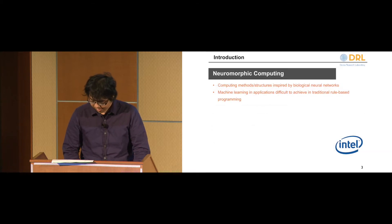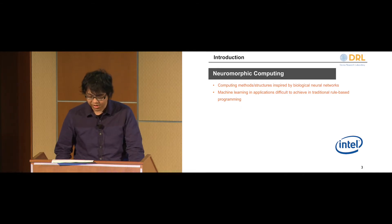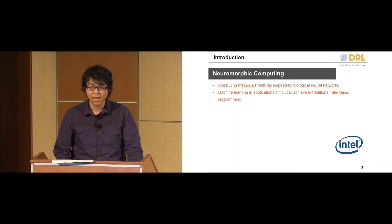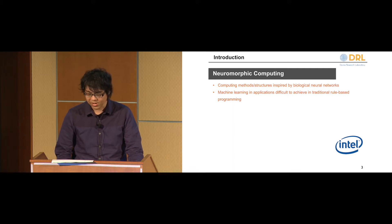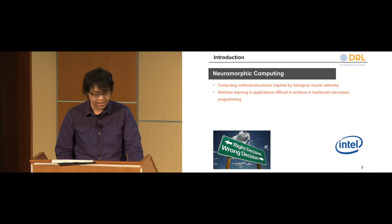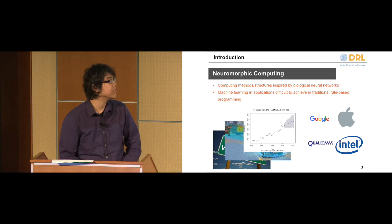Neuromorphic computing generally refers to computing structures, methods, and algorithms that were inspired by the biological nervous system. Currently it is applied to a very diverse range of applications — basically any application that we find it is a little hard to explicitly program. Examples of this include decision-making, forecasting, image recognition, and all sorts of these.